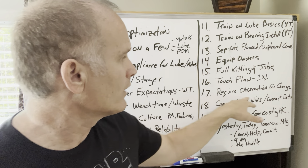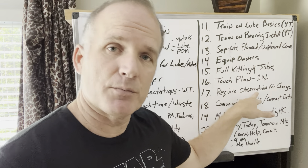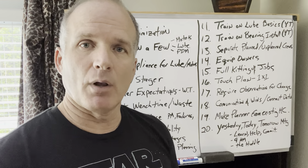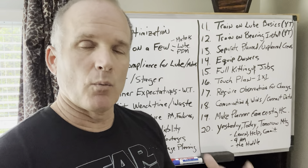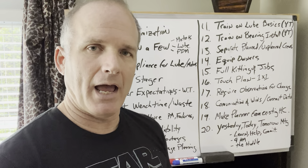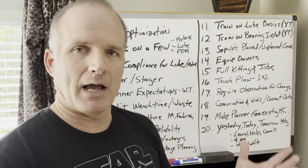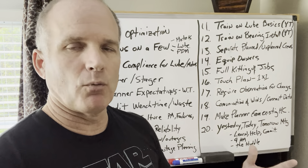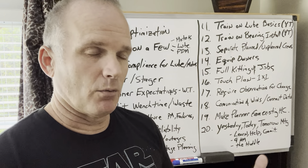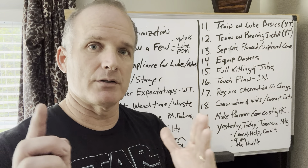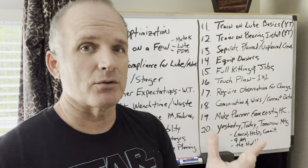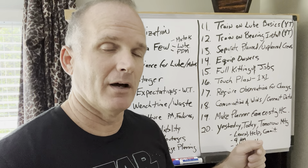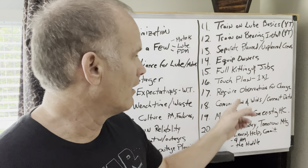Number seventeen: require observation — specifically chalk circle observation — for all changes. Your leadership team in maintenance and reliability should require firsthand observation to be part of the data set, not just averages and KPIs. For example: this PM on this piece of equipment, I've watched it be executed three times. If your mean time between failure is getting smaller, are you doing the PMs with precision? That's a bad assumption to make just from the conference room if it's not observed.